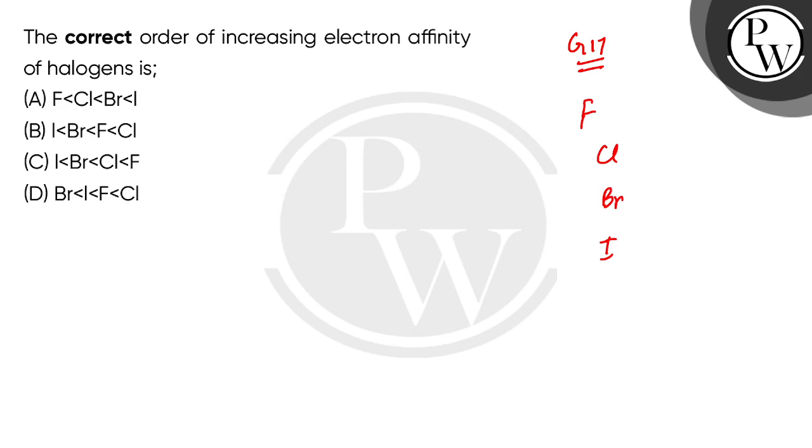In the halogens case, this is the first factor that you think: down the group the size increases because the number of shells is increasing, and electronegativity is decreasing. So if electronegativity is decreasing...